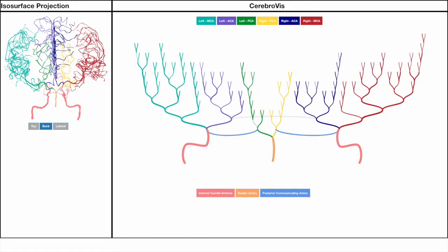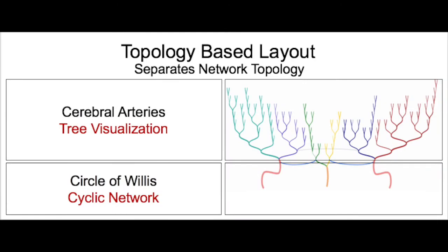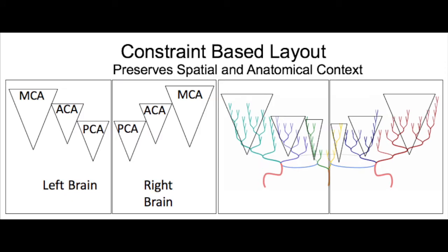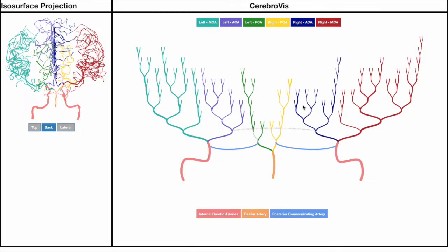We present CerebroViz, an abstract 2D layout to visualize arteries. CerebroViz uses a combination of topology-based layout to ensure readability of the network, and constraint-based layout to preserve spatial and anatomical context.